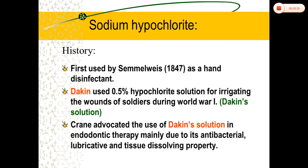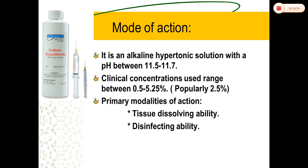We move on to sodium hypochlorite. It was first used by Labarraque in 1847 as a hand disinfectant. Dakin used dilute sodium hypochlorite solution for irrigating wounds of soldiers, which is why it is named Dakin's solution. Besides its wide spectrum, it is sporicidal and has a tissue-dissolving property. Due to this property, it was suggested for use as an endodontic irrigant from 1920.